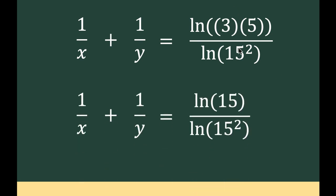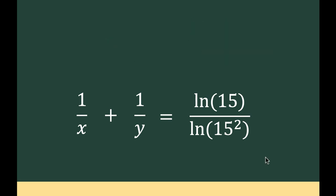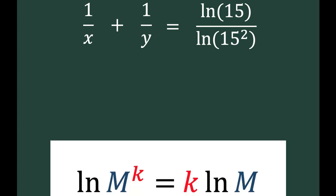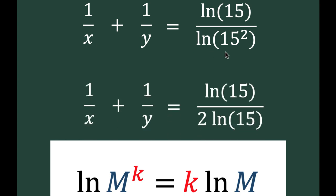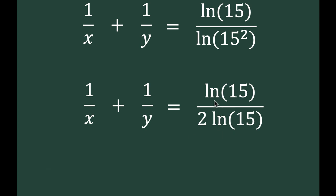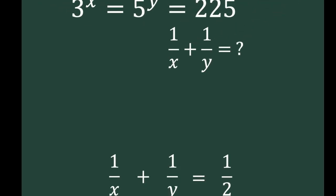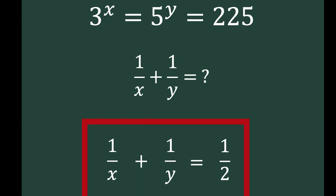Now, 225 equals 15 squared, so ln of 225 equals ln of 15 squared. Applying the power rule, ln of 15 squared equals 2 times ln of 15. So we have ln of 15 over 2 ln of 15. Since ln of 15 appears in both numerator and denominator, they cancel, and the result is 1 over 2. Therefore, 1 over x plus 1 over y equals 1 half, and this is our final answer.